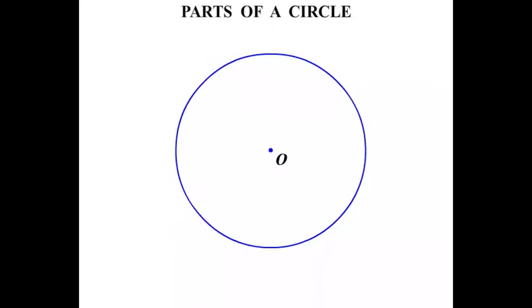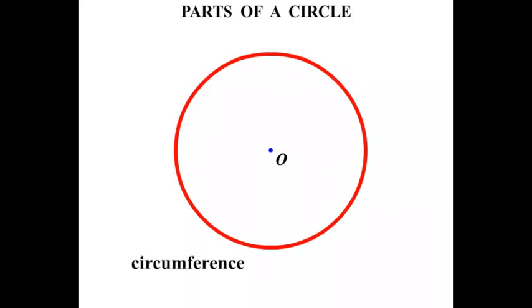If we wanted to know the distance right around the circle we would refer to that distance as the circumference. The distance around the circle is sometimes referred to as the perimeter of a circle, the circumference.